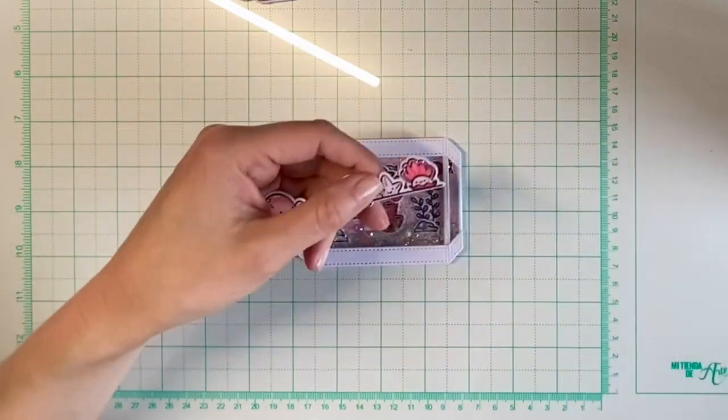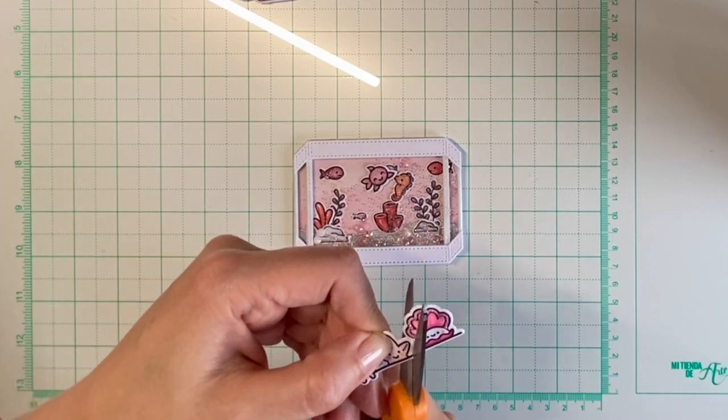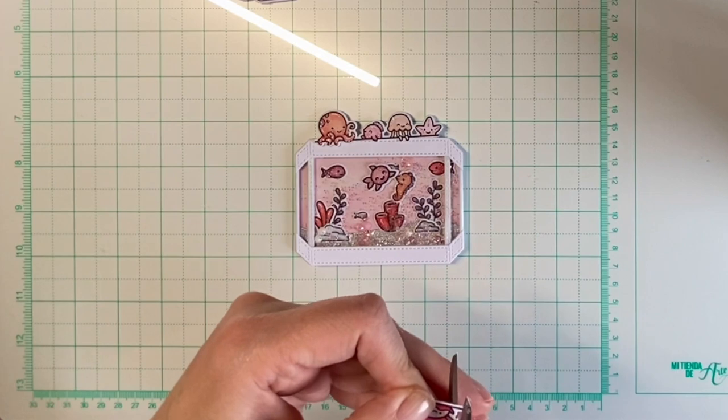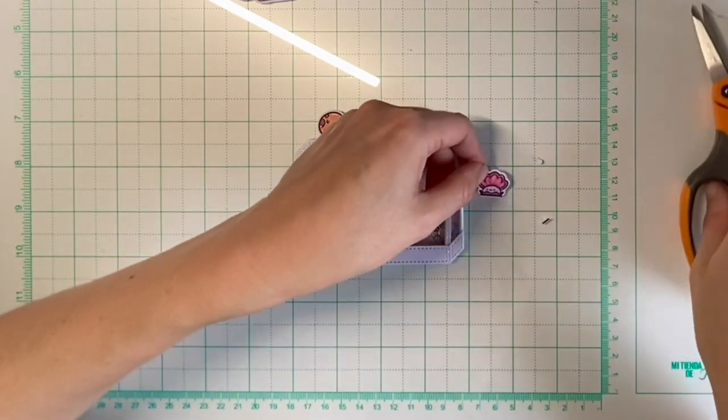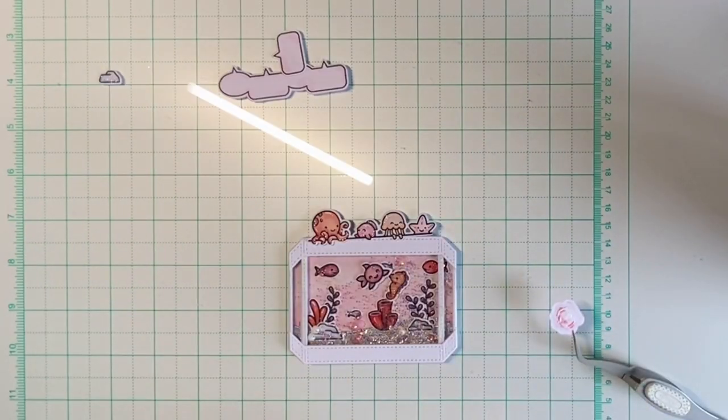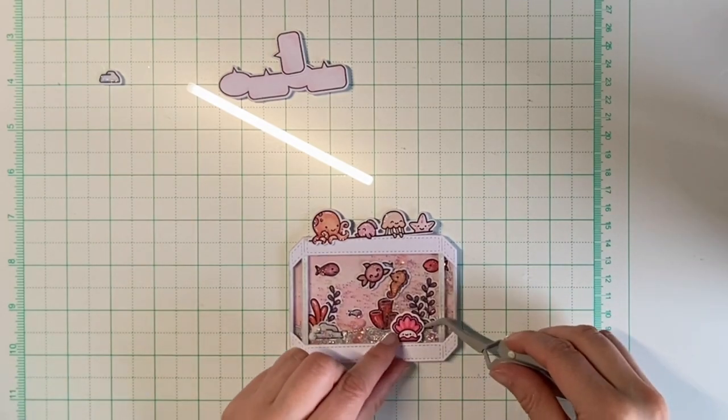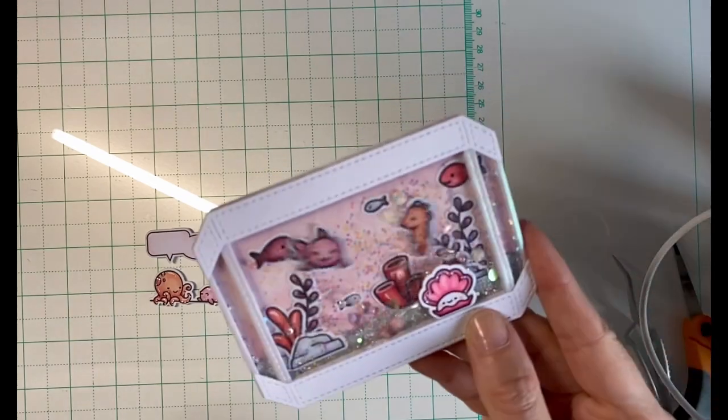Since the aquarium is not wide enough to fit the whole row of critters, I cut the shellfish off. I cleaned the edges and then I will eventually place her at the bottom of the aquarium. And that completes our magic shaker aquarium.